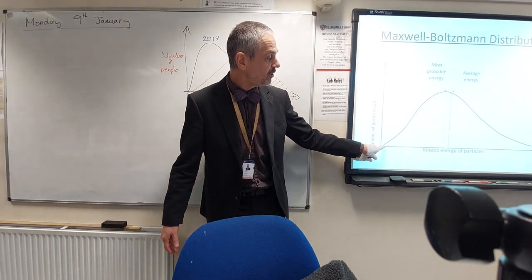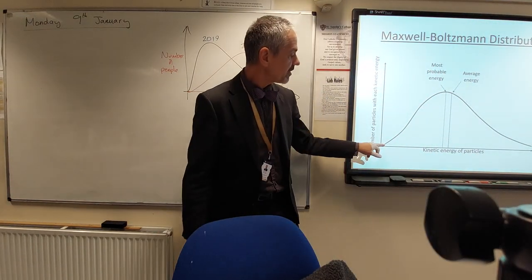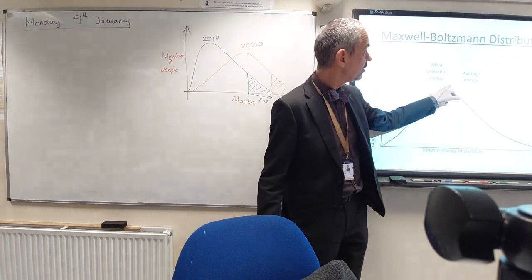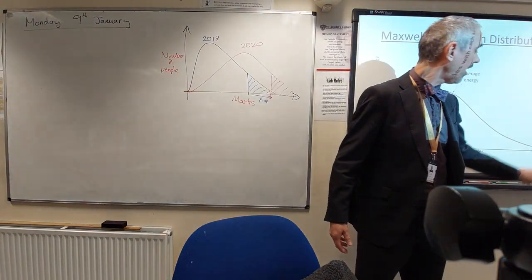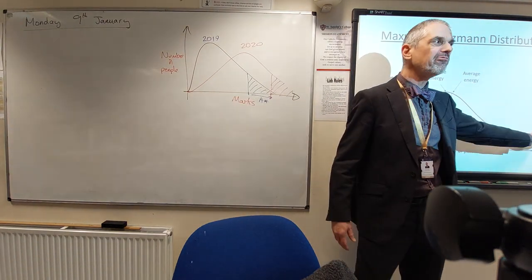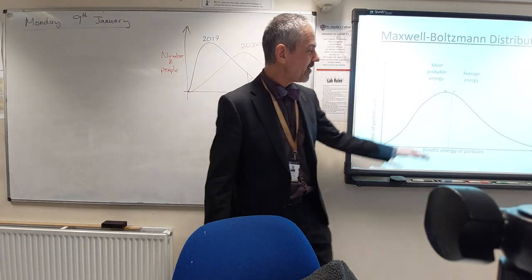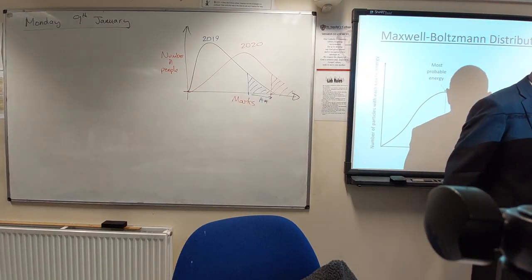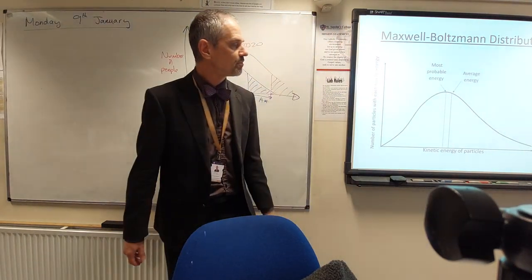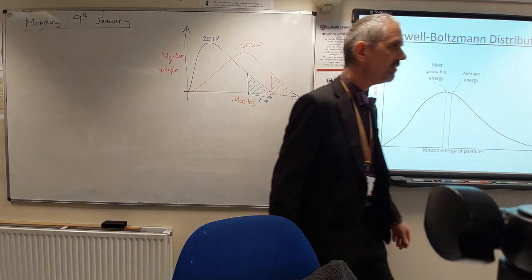We'll have a few particles that have a little energy, and a few that have a lot. So the graph always starts at the origin, goes up to a maximum, and then comes down. We never draw it touching the x-axis — we always leave it floating there. Theoretically you can't have particles with infinite energy, but we don't know where it touches the x-axis, so we just leave it floating.